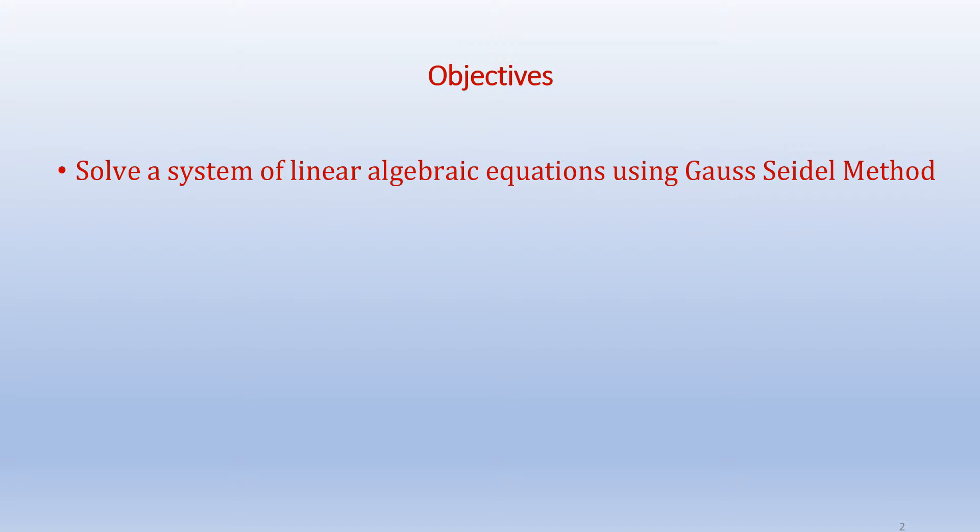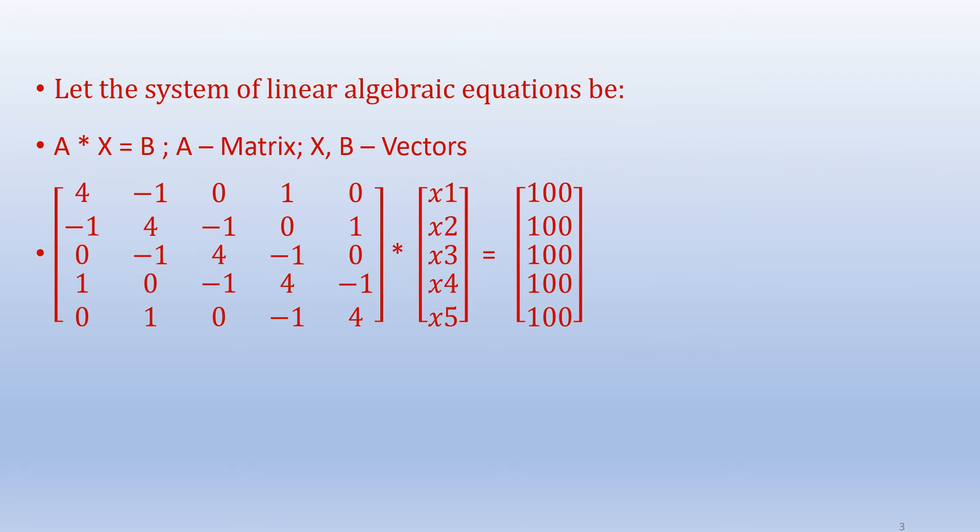We have used Jacobi iteration method in the previous video. A system of linear algebraic equations can be represented as A times X equals B where A is the square matrix of dimensions n by n. X is the solution vector of dimensions n by 1 and B is the right hand side vector that has dimensions n by 1.